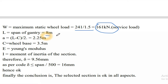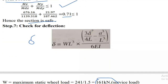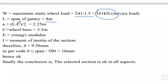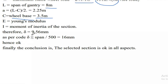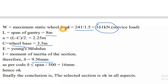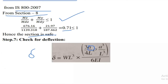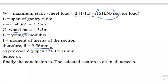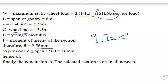Span of gantry L = 8 m. Value of 'a' (distance) = (L − c) / 2 = 2.25 m, wheelbase = 3.35 m. Substituting into the deflection formula, δ = 9.56 mm.